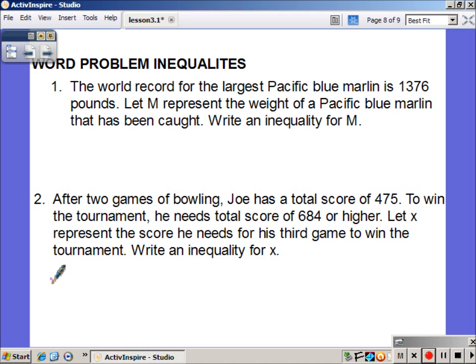Of course, going to finish off with some word problems then. First one, the world record for the largest Pacific blue marlin is 1,376 pounds. M representing the weight of that blue marlin. We want an inequality. So we're comparing M to the 1,376. This is the largest ever caught. So it does actually equal that. So we would have an or equal to. Well, that's the biggest value that's ever been caught. So every other weight would have to be less than or equal to that given value. If it's the smallest, everything else would be bigger. This one's the biggest, so all other weights would have to be smaller than that.